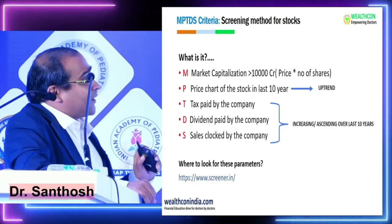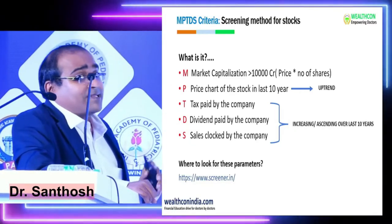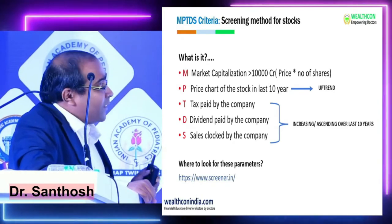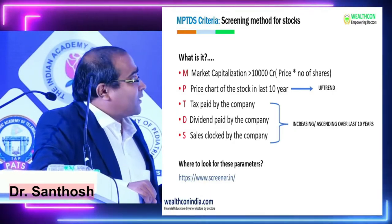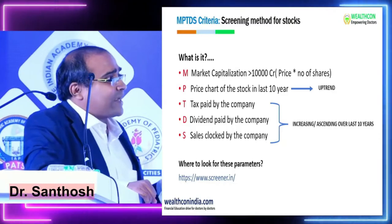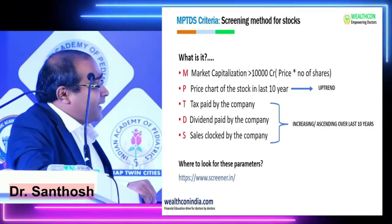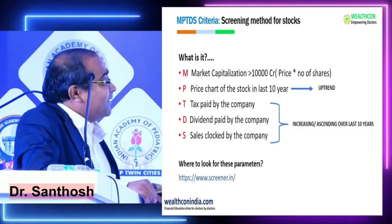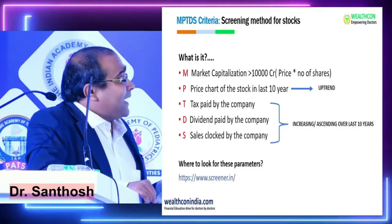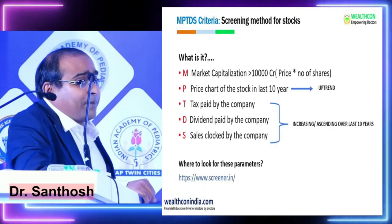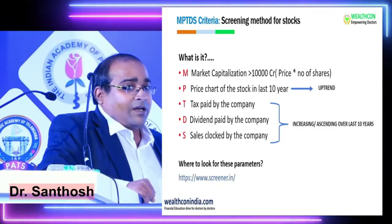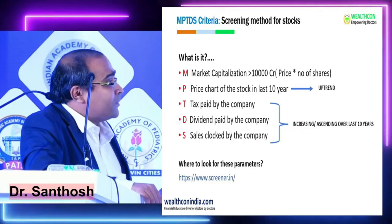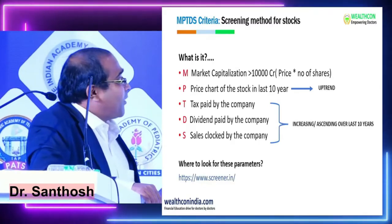Out of 6,000, your 5,700 companies will be eliminated. What remains are large-cap or blue-chip shares where market cap is more than 10,000 crores. Market cap is simply price multiplied by number of shares. If a company's share price is 500 rupees and there are one lakh shares circulating, the market cap comes to around 5 crores. Applying this filter on screener.com gives you around 300 to 350 companies.